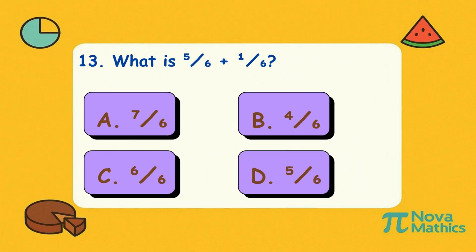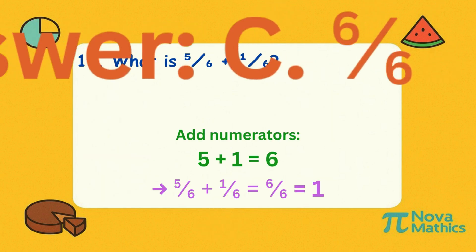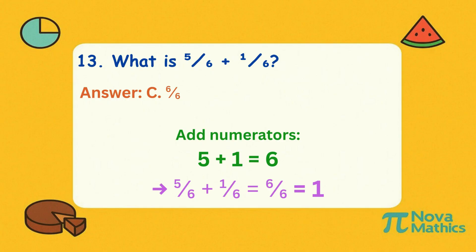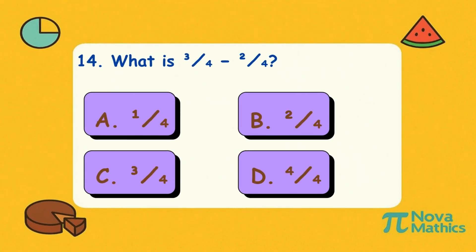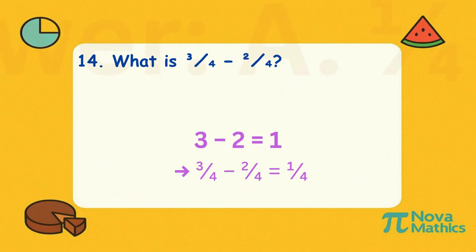Thirteen. What is five-sixths plus one-sixth? Five plus one is six on top. Six over six equals one whole. Fourteen. What is three-quarters minus two-quarters? Three minus two is one. The bottom number stays the same. That's one-fourth.